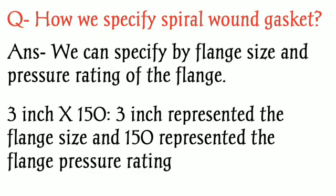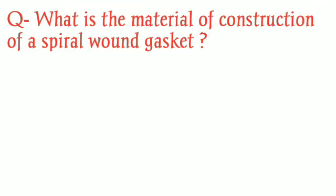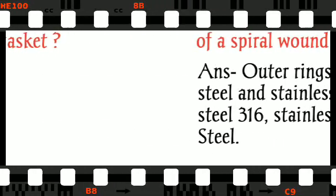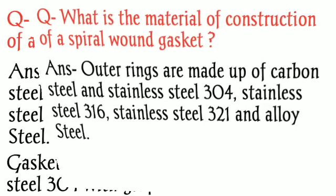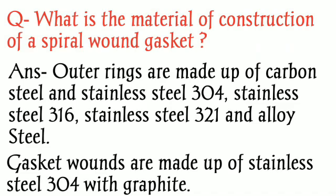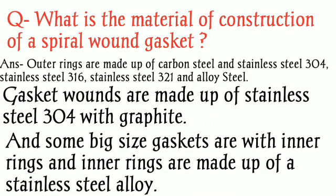The next question is: what is the material of construction of a spiral wound gasket? Outer rings are made of carbon steel, stainless steel 304, stainless steel 316, stainless steel 321, or alloy steel. The gasket windings are made of stainless steel 304 with graphite. Some larger gaskets also have inner rings made of stainless steel alloy.